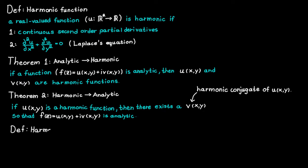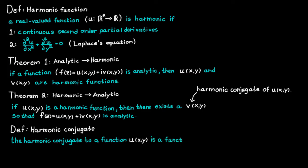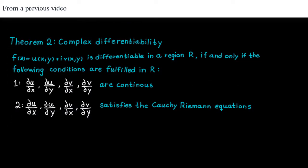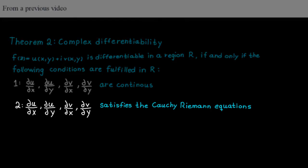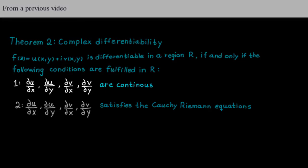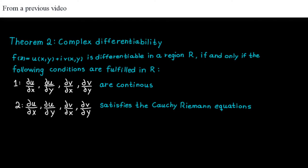The strict definition of the harmonic conjugate is that the harmonic conjugate to a function u is a function v such that the function f is differentiable. For f to be differentiable, it simply needs to fulfill the Cauchy-Riemann equations and have continuous first-order partial derivatives.